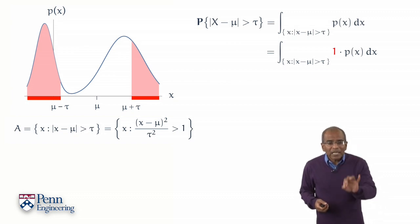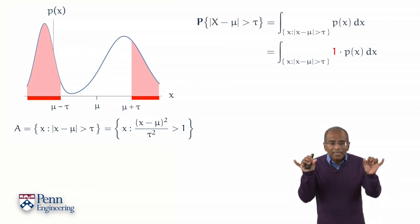Notice that in the region of integration, over all the x's that comprise a set A, in that region, the square of x minus mu divided by tau squared is bigger than 1.